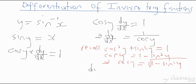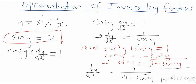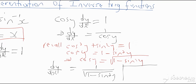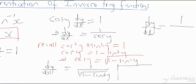So dy/dx becomes 1 / √(1 − sin²(y)). Going back, we know that sin(y) = x, which means sin²(y) = x². Therefore dy/dx = 1 / √(1 − x²), and that is the final answer.